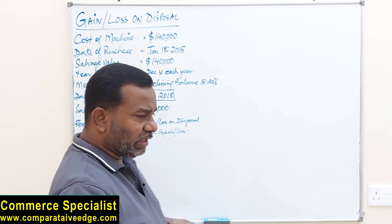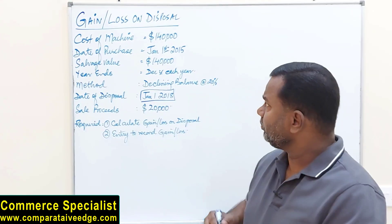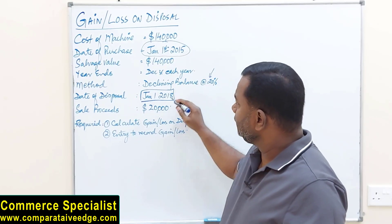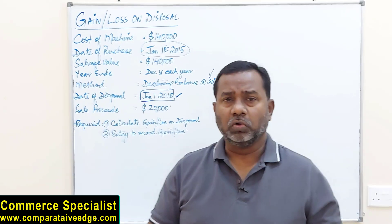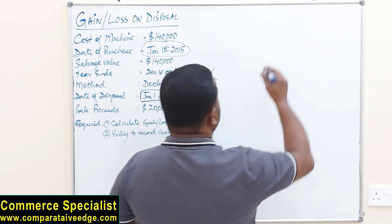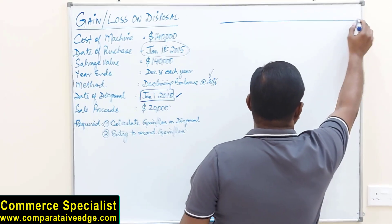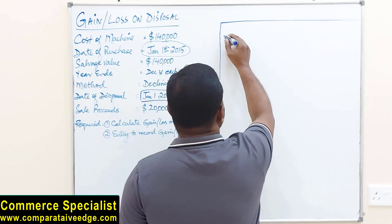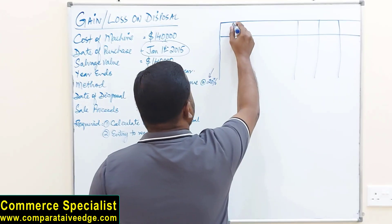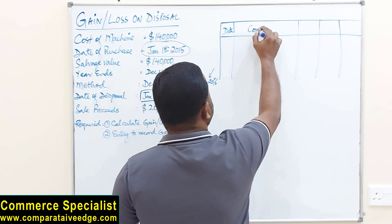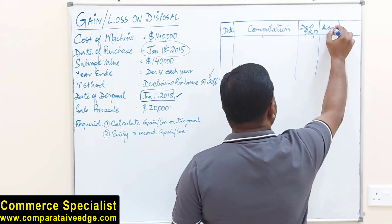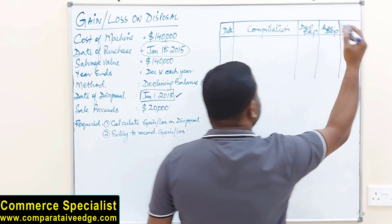In the first step we are going to calculate depreciation using the declining balance method from the date of purchase right up till the date of disposal. In the declining balance method, most of the time a percentage is given. I'm making a table here, which is advisable. The table has columns for: date, computation, depreciation expense (the current year depreciation), accumulated depreciation (total depreciation), and net book value (value after depreciation).